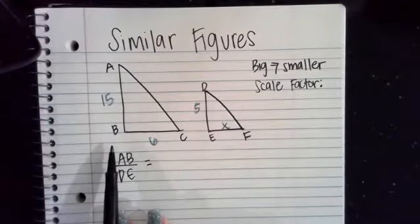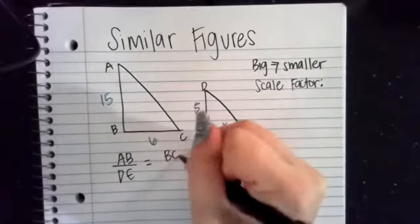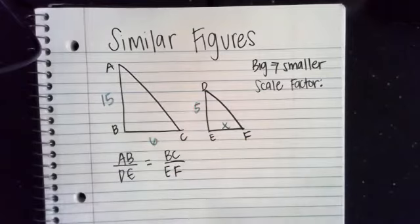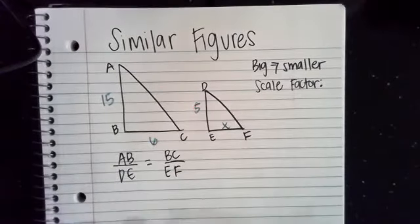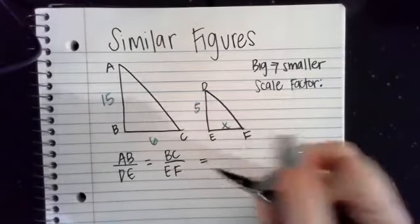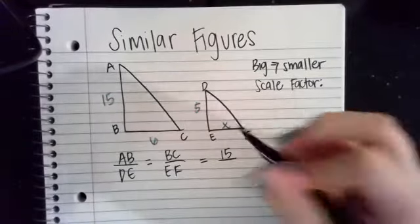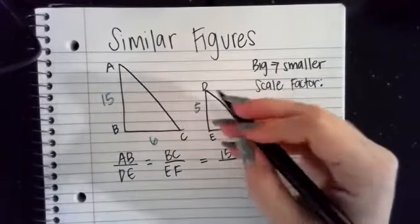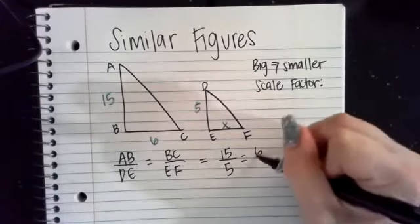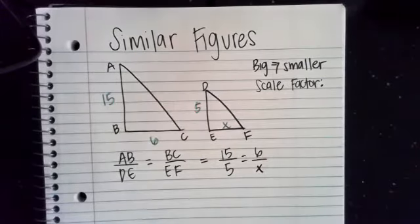The other ratio we're going to set up is BC over EF. If I now take these corresponding sides and plug in their distances, I am now going to have a proportion completely set up. So AB is 15, DE is 5. BC is 6. And EF, we don't know, so we're just going to use X. We're going to use the variable.